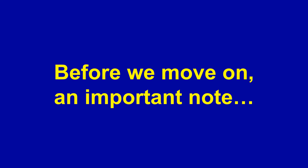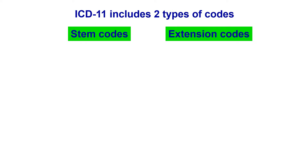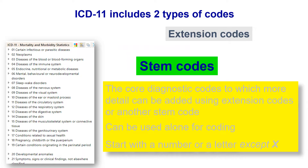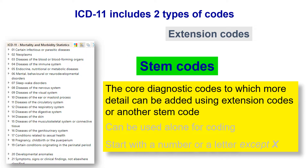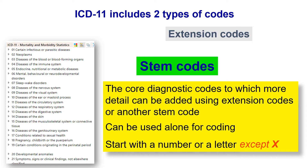Before we move on, here's an important note. ICD-11 includes two types of codes: STEM codes and extension codes. STEM codes are the core diagnostic codes, organized in 26 chapters that follow the traditional pattern of ICD. They can be used alone for coding, and they start with a number or a letter, except the letter X.